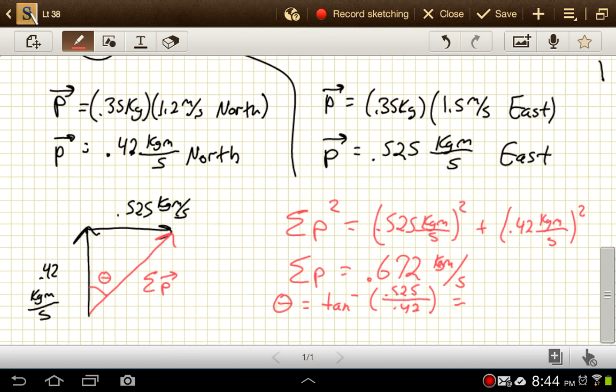That's going to give us 51 degrees. So our overall momentum as a vector is 0.672 kilogram meters per second at 51 degrees. And that looks like it would be east of north.